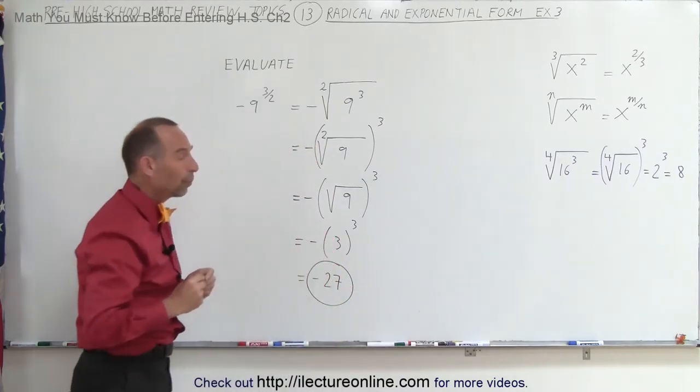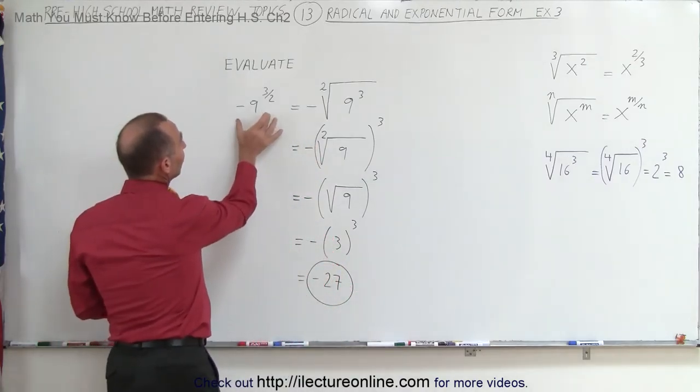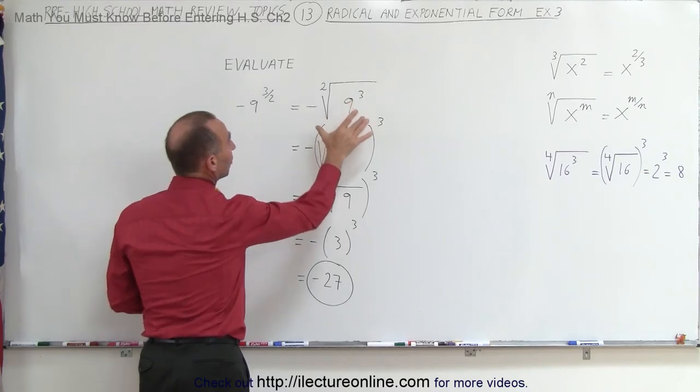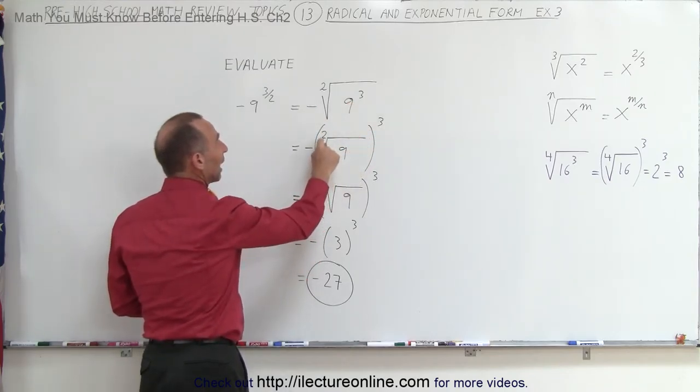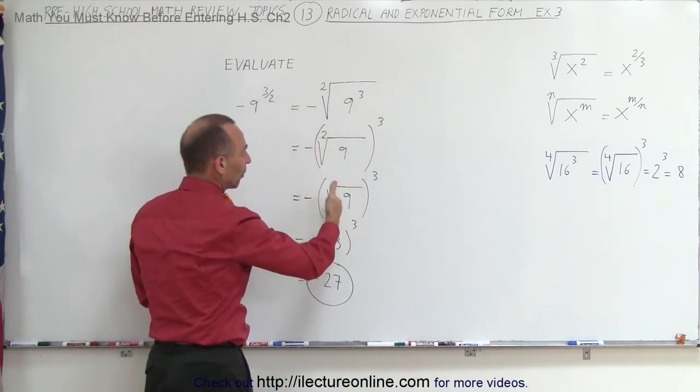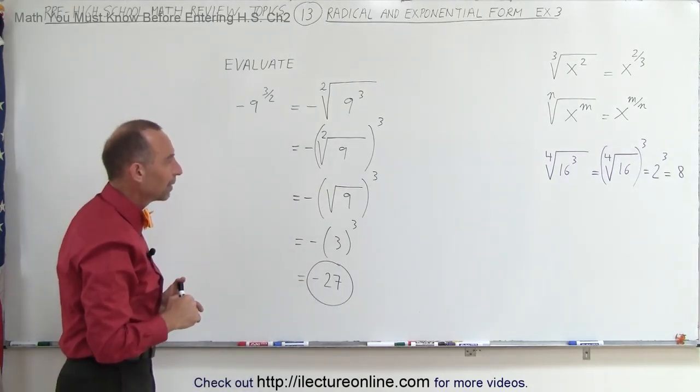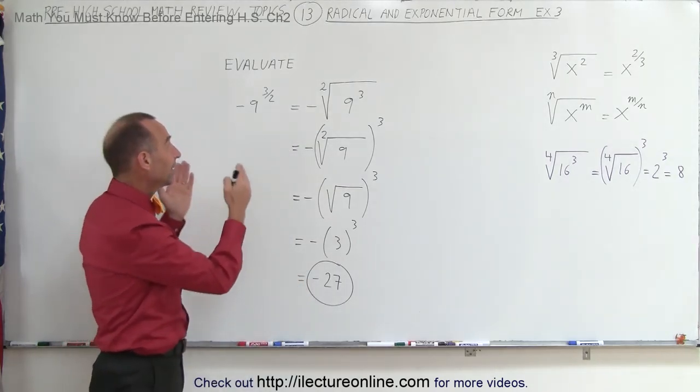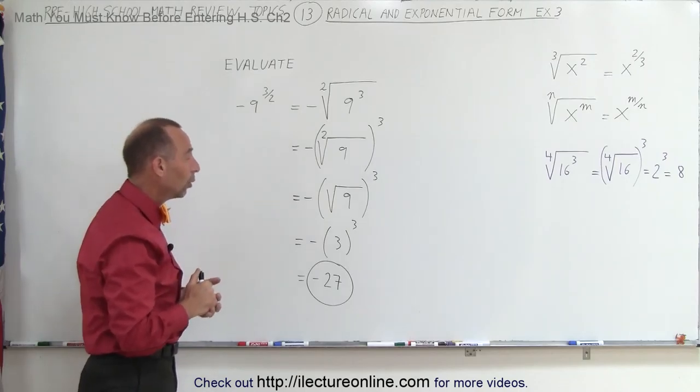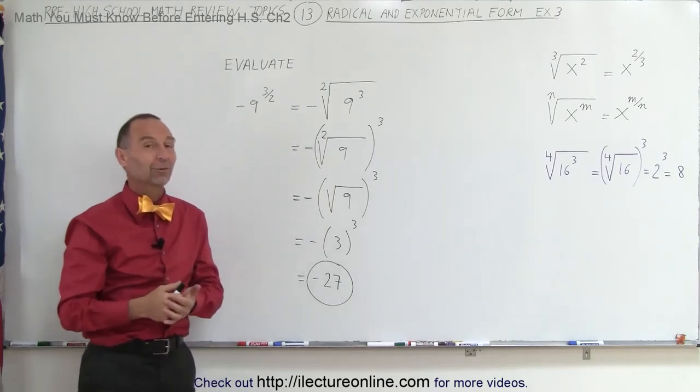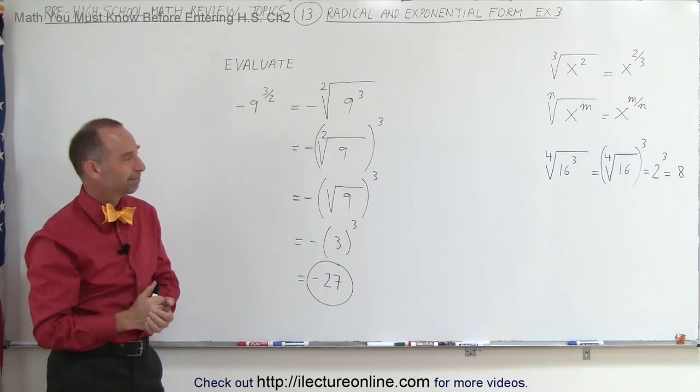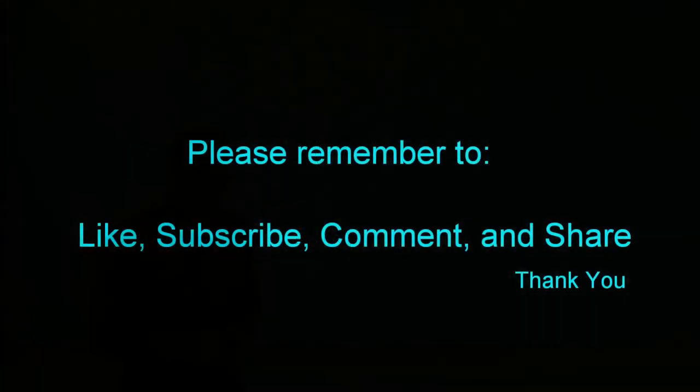So again, it's important to recognize that this can be written as this, which can be written like that. And again, we don't have to write the 2 there. If it's just a square root, you can simply leave the 2 off, and that means exactly the same thing. When you begin to recognize that, these types of problems become a whole lot easier to work with, and that's why we do it like that.